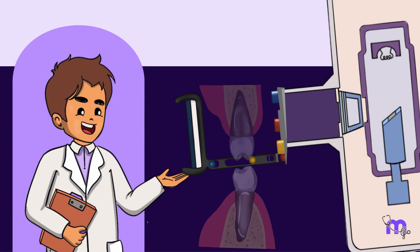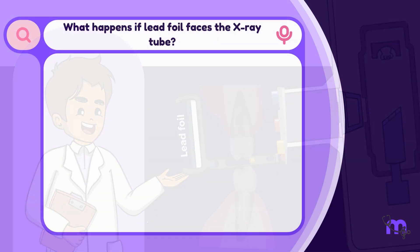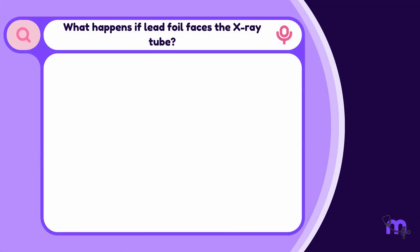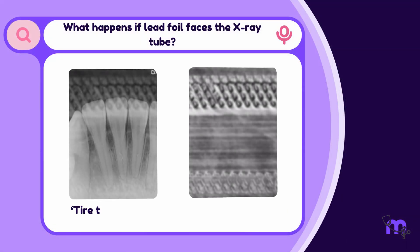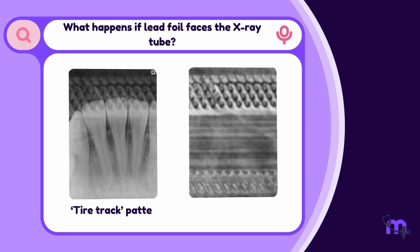To ensure a clear image, the film is always positioned with the lead foil facing away from the x-ray tube. If this is not done, a tire track pattern — also known as a herringbone pattern or reverse image — will appear on the final radiograph.